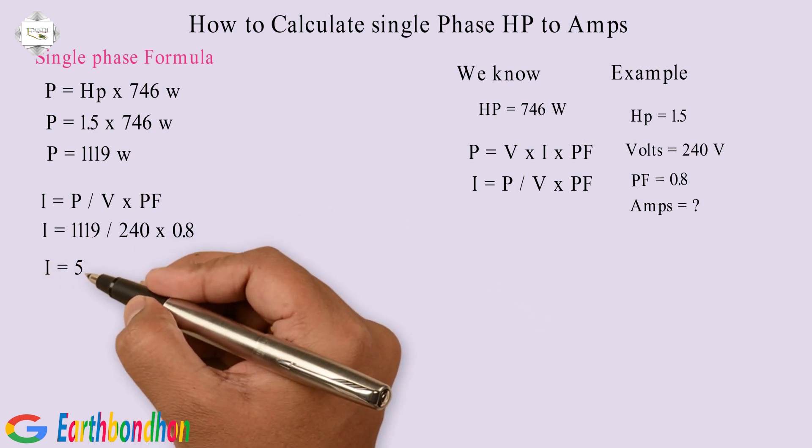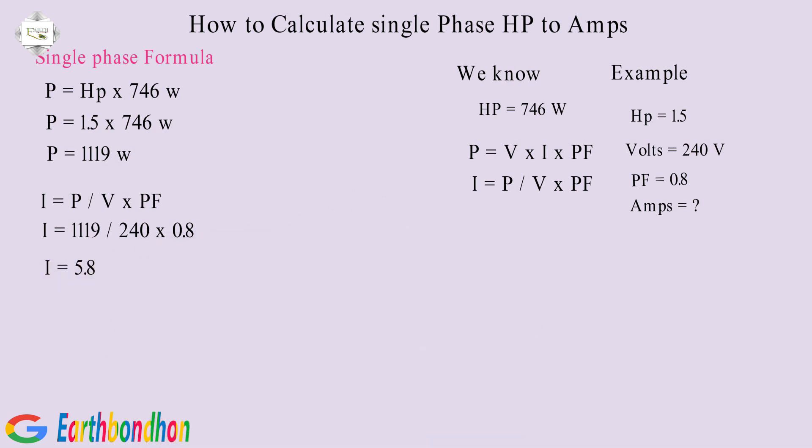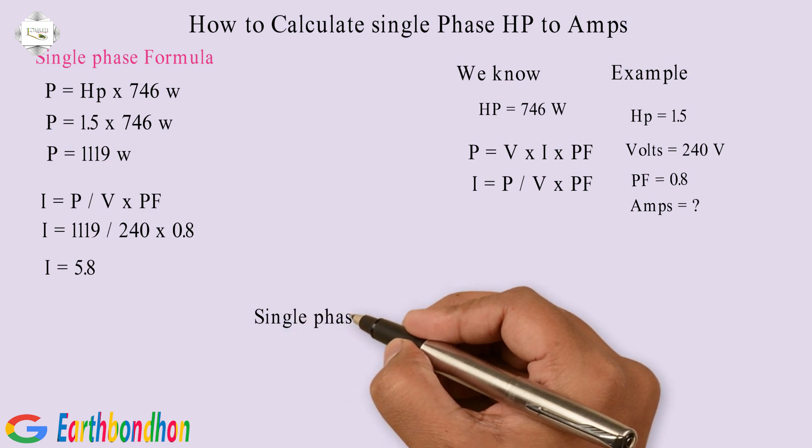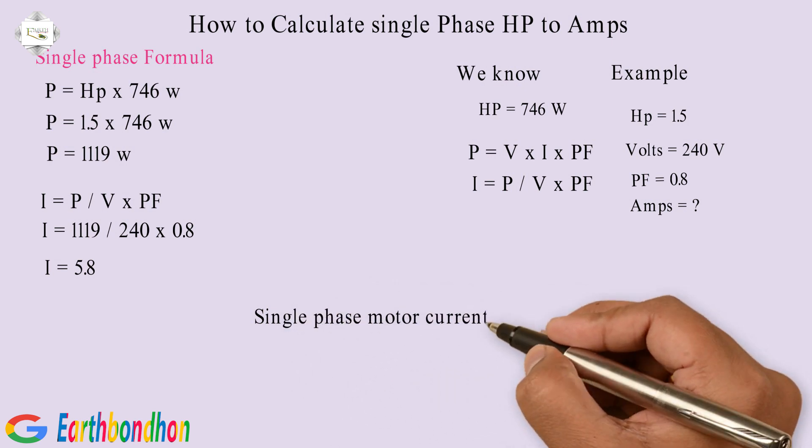Equals 5.8 Amps. Single Phase Motor Current equals 5.8 Amps.